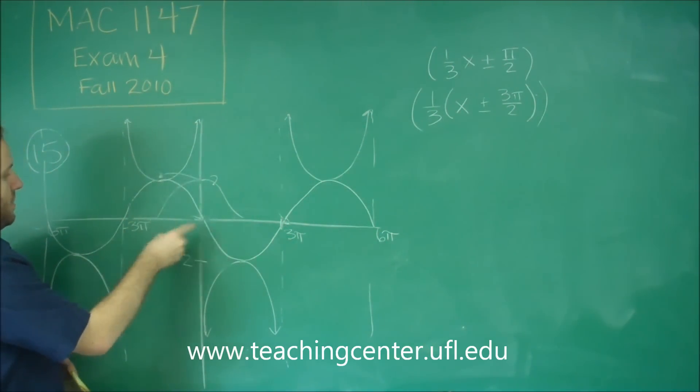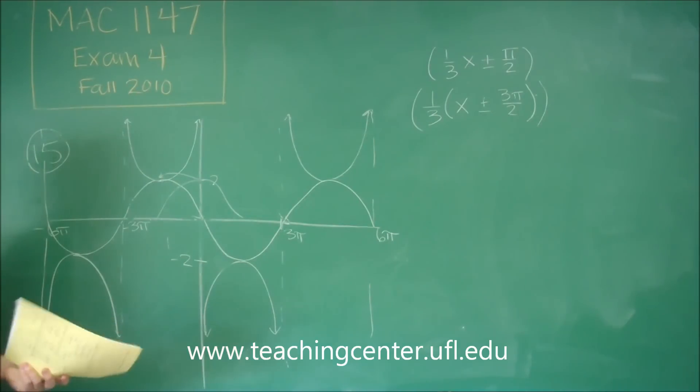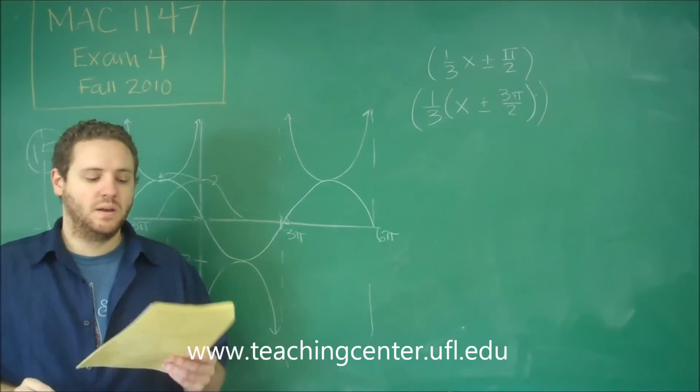Half of 3 pi. 3 pi is the distance from this line to this line, we're only going half that far, that's 3 pi over 2. So we need to pick the function that's shifting left 3 pi over 2.